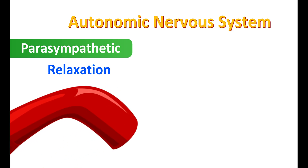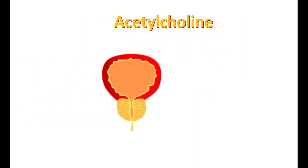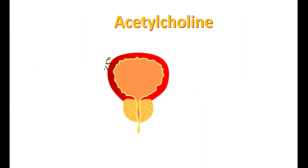Interestingly, it causes relaxation in blood vessels, but this is not a direct effect — it is a nitric oxide-mediated effect that results in relaxation. Coming to our topic, the action of acetylcholine on the bladder is important here. Cholinergic neurons are supplied to the bladder, where they release acetylcholine as a mediator.